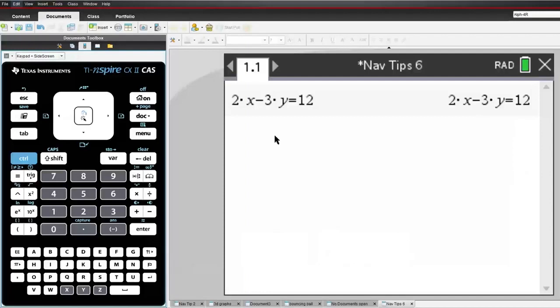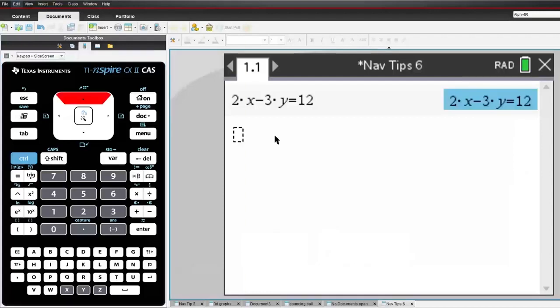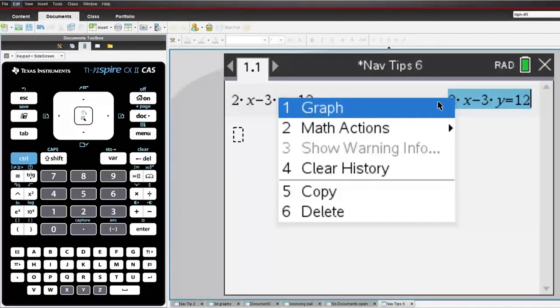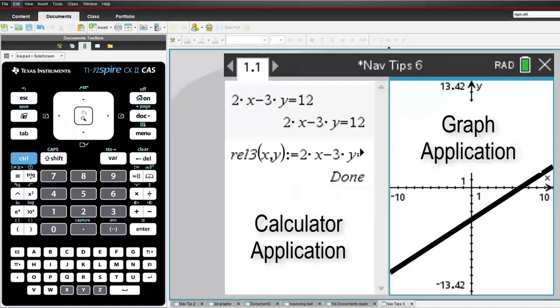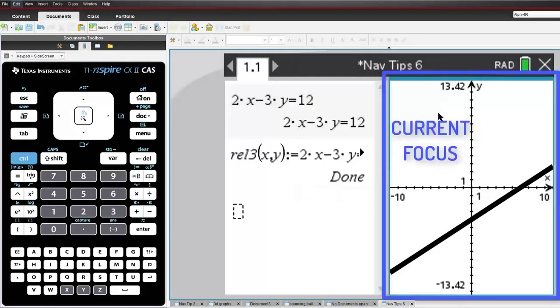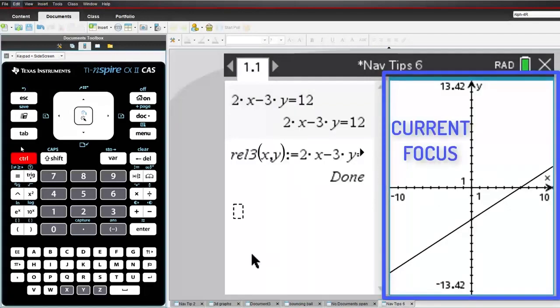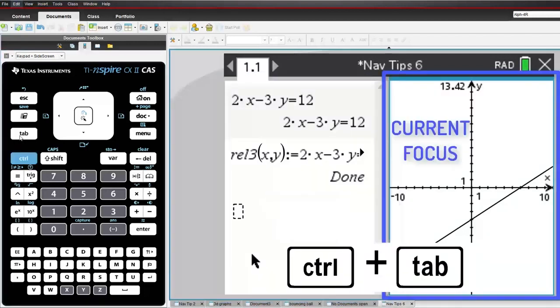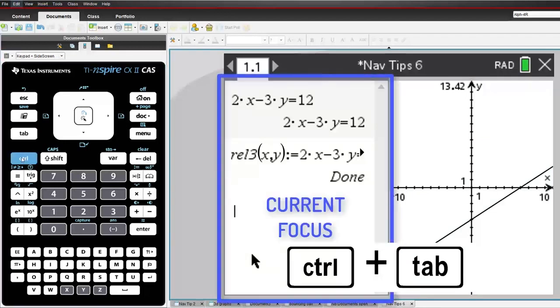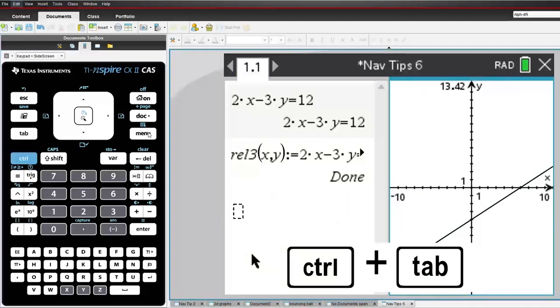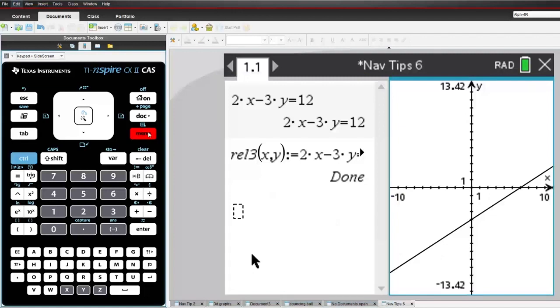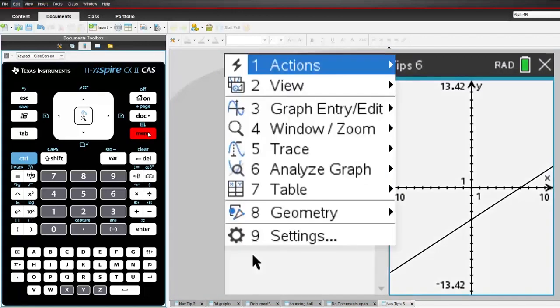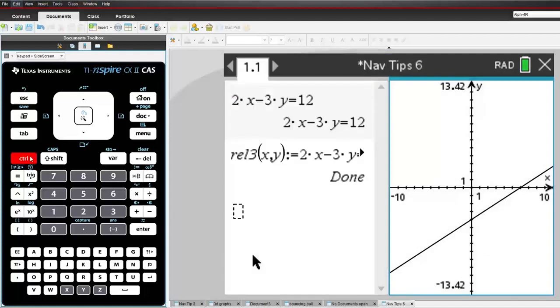A computer can run multiple applications or programs at the same time. Most people know that you can press Alt Tab or Windows and Tab to view or move between applications. On TI Inspire, you can swap between applications displayed on the current page by pressing CTRL and Tab. The application currently in focus is surrounded by a border. You can also tell which application is in focus by checking the menu.